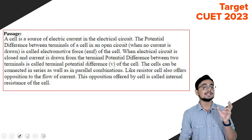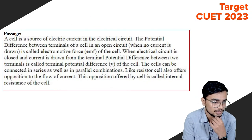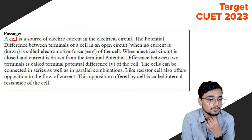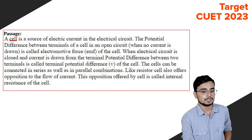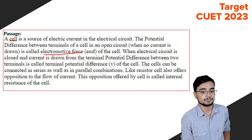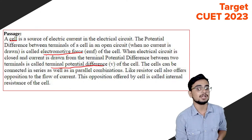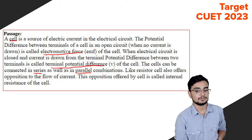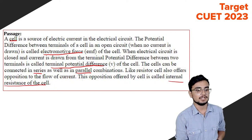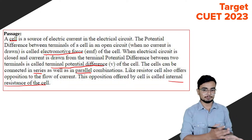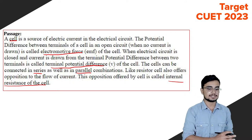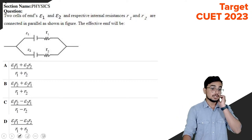The passage introduces a cell as a source of electric current in a circuit. The potential difference between the terminals of a cell in an open circuit is called the electromotive force or EMF. When the circuit is closed and current is drawn, the potential difference is called terminal potential difference V. The cells can be connected in series or parallel, and the opposition offered by the cell to current flow is called the internal resistance of the cell.